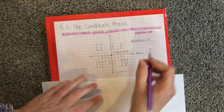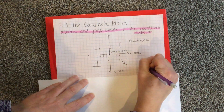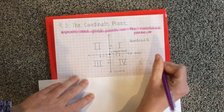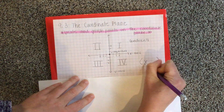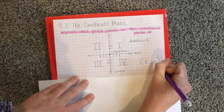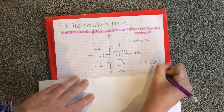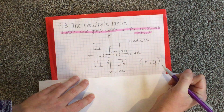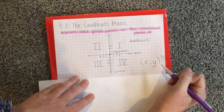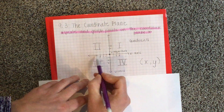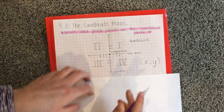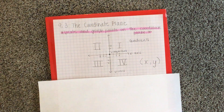When you graph on the coordinate plane, you're going to have something called an ordered pair, where the first value is your x value and your second value is the y value. It will always go in this order — the first number is on the x-axis, the second number is on the y-axis.